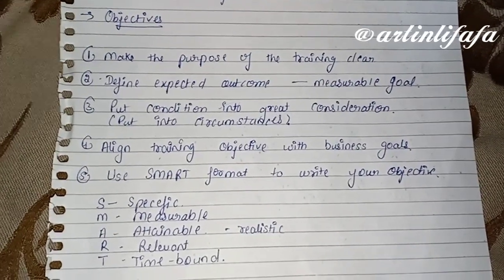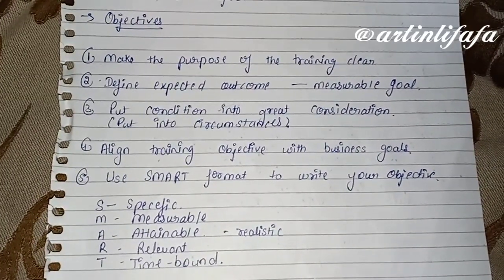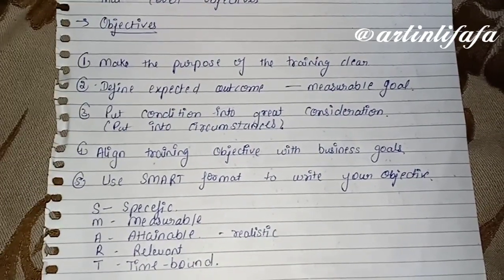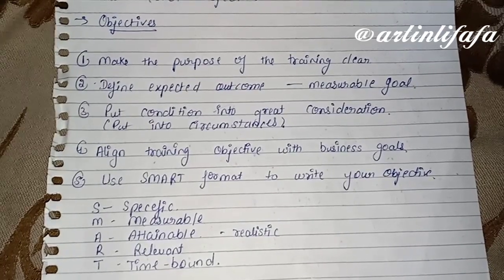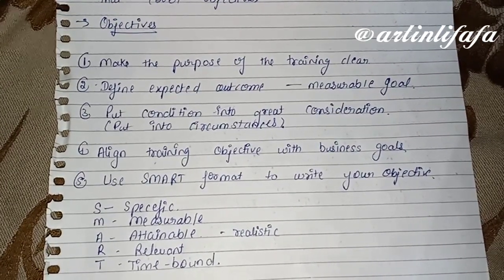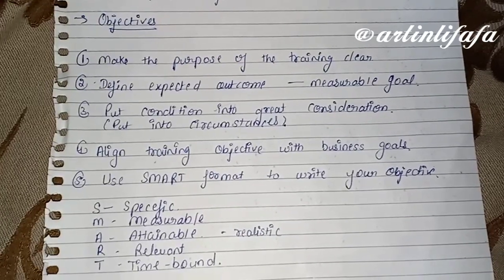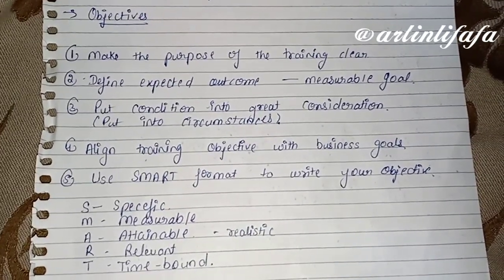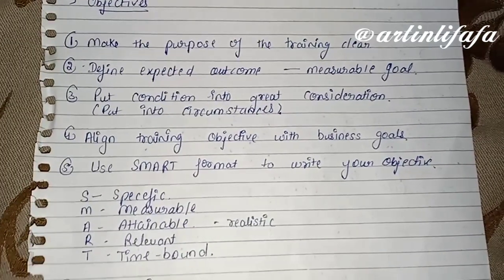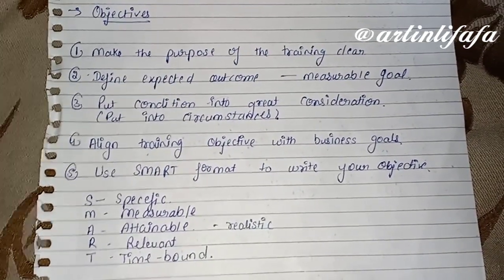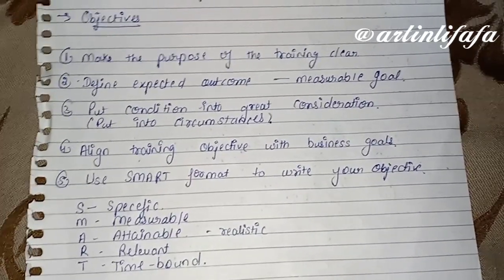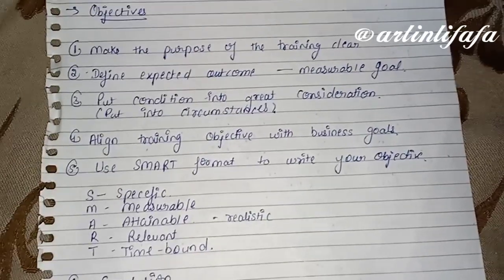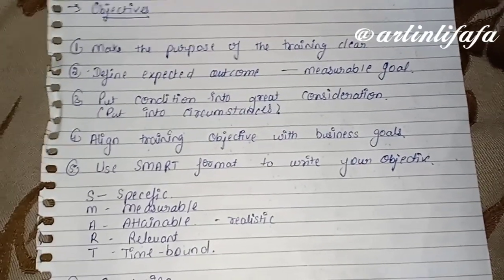Employee को क्यों training की need है वो clear रखे। उसके बाद define expected outcome — वो outcome define करे और content में लिखे जिसे वो measure कर सके। ऐसा कोई content ना लिखे जिसे measure ही नहीं कर सकता। Next is put conditions into great consideration — training में जो conditions दी जा रही हैं उन circumstances के according समझने की कोशिश करो।